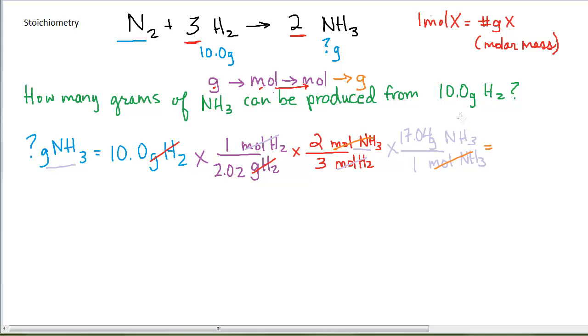All I have left to do is to punch it in my calculator and round it correctly. It looks like I need three significant figures on this problem. And so my final answer is 56.2 grams of ammonia.